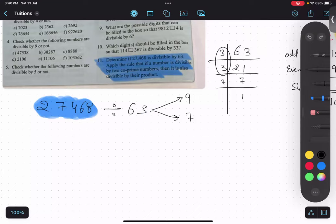So let us check for 9 first of all. 2 plus 7 plus 4 plus 6 plus 8. So what is the total? 2 plus 8 is 10, 4 plus 6 is 10, 20 plus 7 is 27.